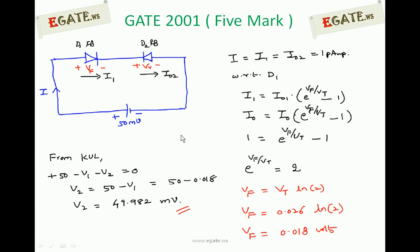So these are the answers. I equals 1 pico ampere, Vf is 0.018 volts, Vr is 49.982 millivolts. Thank you.